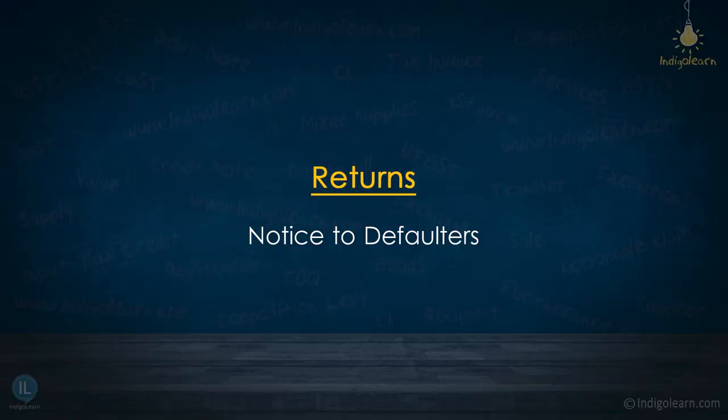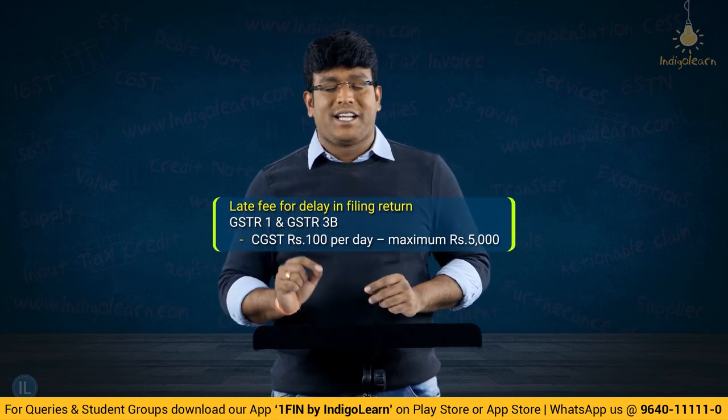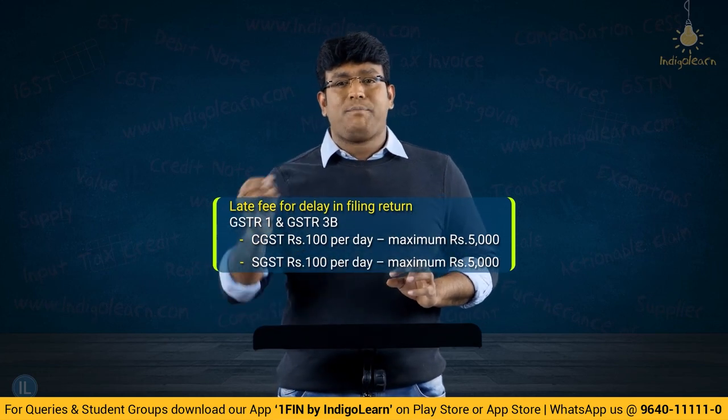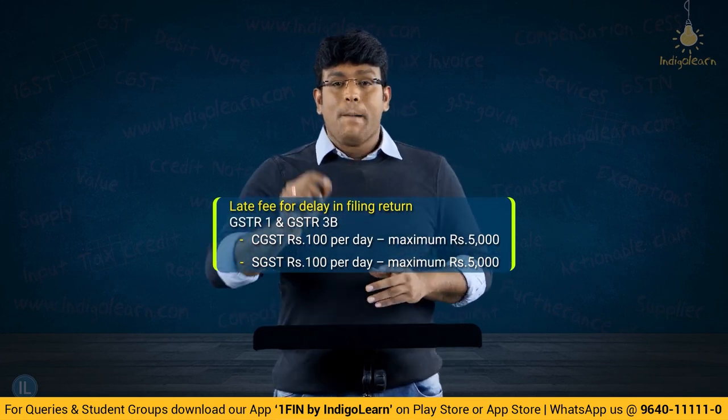The next amendment in the returns chapter is about late fees for notice to defaulters. In general, in case of delay in furnishing GSTR-1 or GSTR-3B, the late fees under the CGST Act is 100 rupees per day subject to a maximum of 5,000, and equally under the SGST Act — so technically 200 per day subject to a maximum of 10,000.